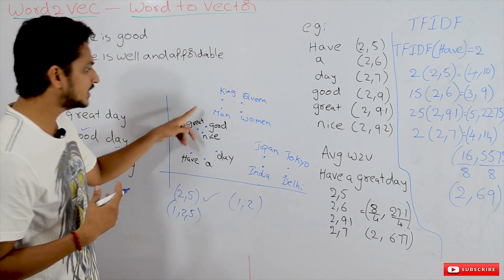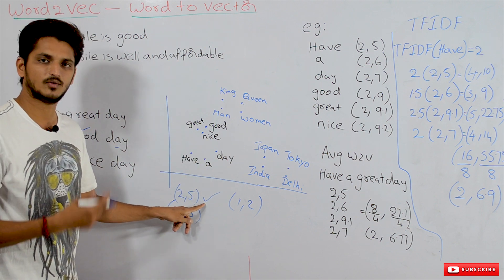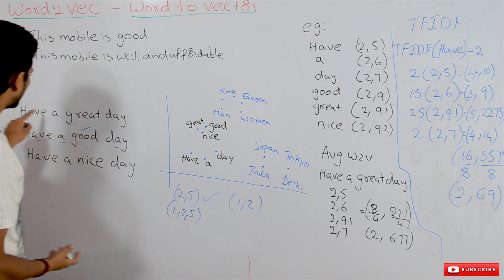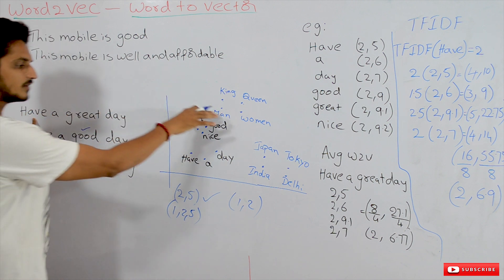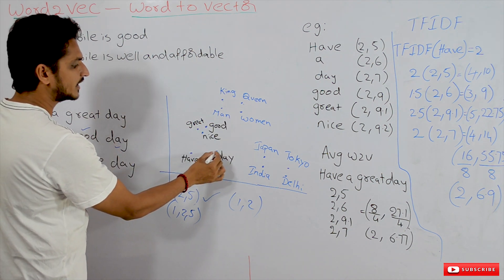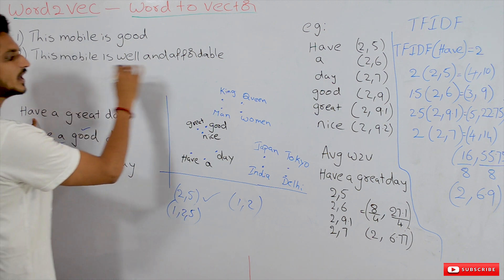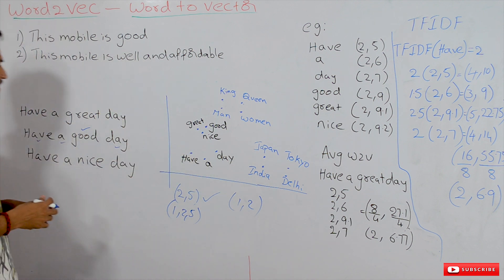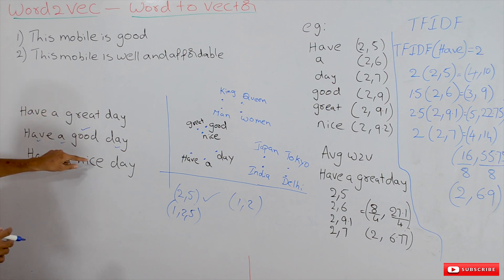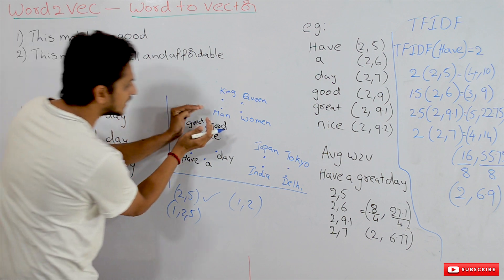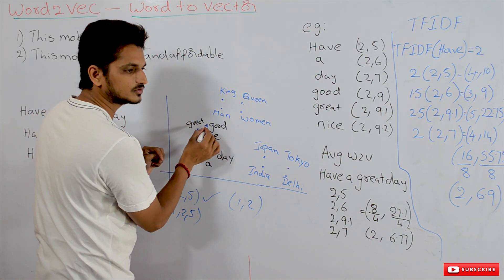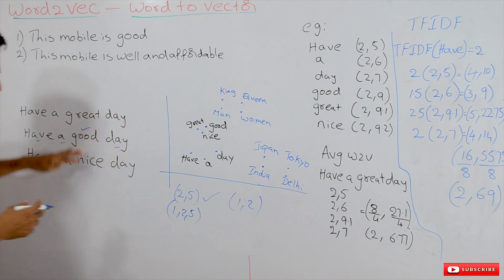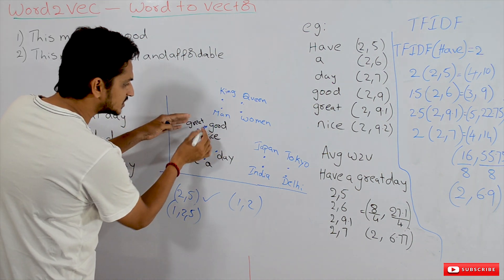This we call a vector. A two-dimensional vector is given as (2, 5); a three-dimensional vector has three values. So each word from the data corpus is given a vector in the coordinate space — 'have,' 'a,' 'day' each get a vector. Word2Vec will identify similar words based on context, and those similar words are assigned nearest points — grouped together. So the distance between similar words will be less.